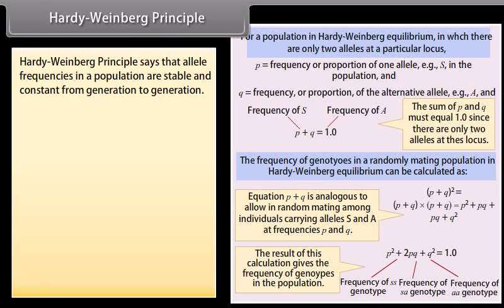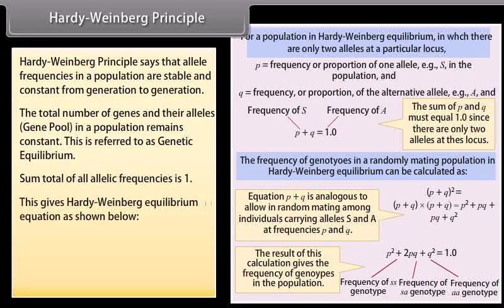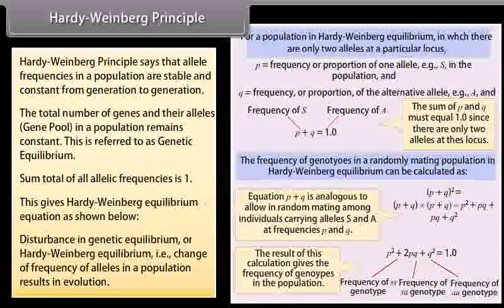The Hardy-Weinberg Principle states that allele frequencies in a population are stable and constant from generation to generation. The total number of genes and their alleles — the gene pool — in a population remains constant; this is referred to as genetic equilibrium. The sum total of all allelic frequencies is 1. Disturbance in Hardy-Weinberg Equilibrium, that is, change of frequency of alleles in a population, results in evolution.